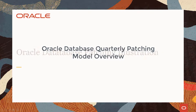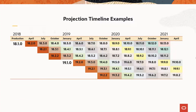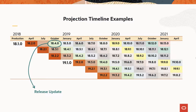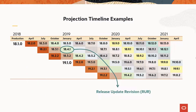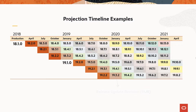Since Oracle Database 12.201, the quarterly bundle patching model uses release updates, also called RU, and release update revisions, called RUR. RU patches are proactive, highly tested bundles of critical fixes, which enable you to avoid known issues.